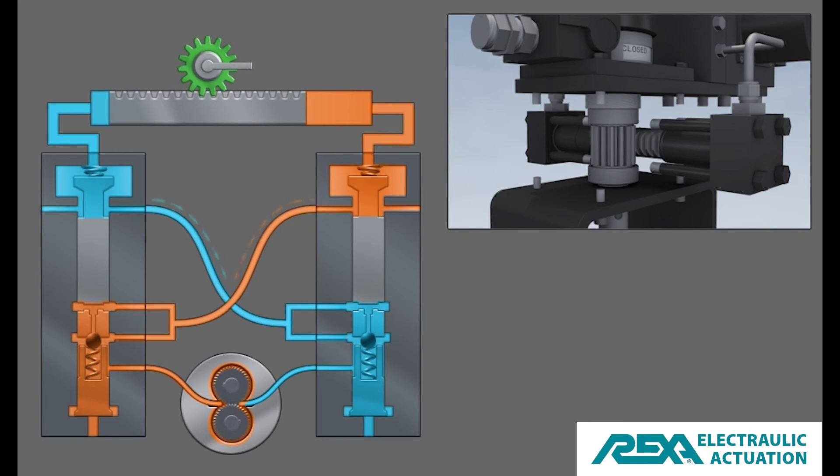The actuator will move the connected valve in the direction that the cylinder drives it based on from or to which side of the cylinder oil is being transferred. Once the valve reaches the desired position, the pump will stop, flow match valves will return to their normal position, and the valve actuator will be locked in its current position.